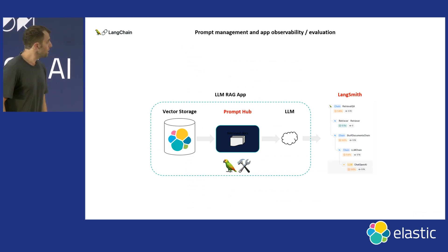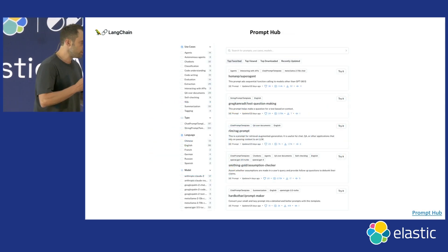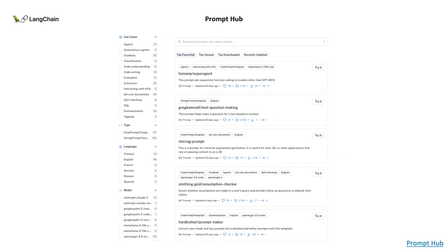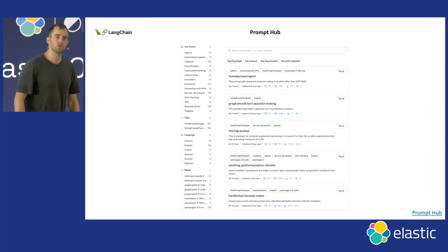The Prompt Hub is a nice library of prompts people use for all sorts of applications — RAG, summarization, and more. You can store your own prompts there, share them, or keep them private. When building these applications you often have messy text files scattered around containing prompts, which are hard to manage. The Prompt Hub lets you store them remotely, version-control them, and share them — it's a very nice tool.